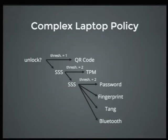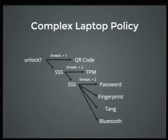But if you can't do that, we move on to the next level. At this next level, we have a threshold of two, which means both branches must hold true. We must have TPM — the disk must be in the chassis. This allows the admin to pull the disk out of the chassis and use the QR code, but in a normal case the disk must remain in the chassis.